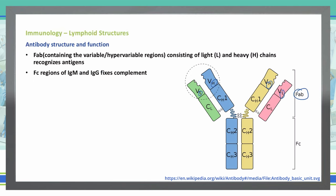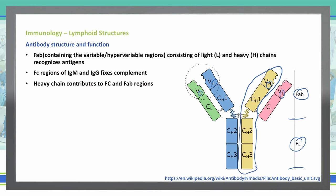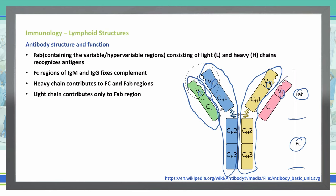Our Fc region is the post of the Y, or the long arm of the Y, down here. It corresponds to the region of IgM or IgG and fixes complement. Heavy chains contribute to both the Fc and the Fab regions — your heavy chains make up that long arm as well as the forks. Your light chains are only found in the Fab region on the outside, as they interact only with the heavy chains in the Fab region.